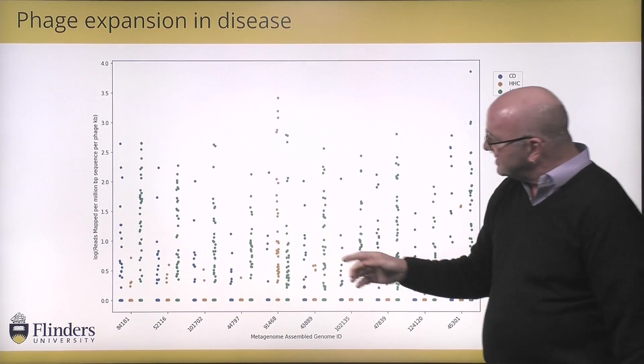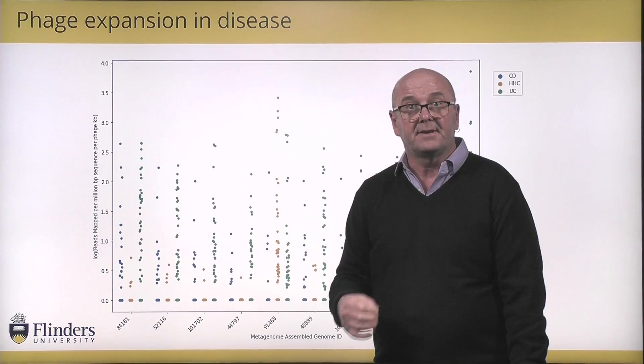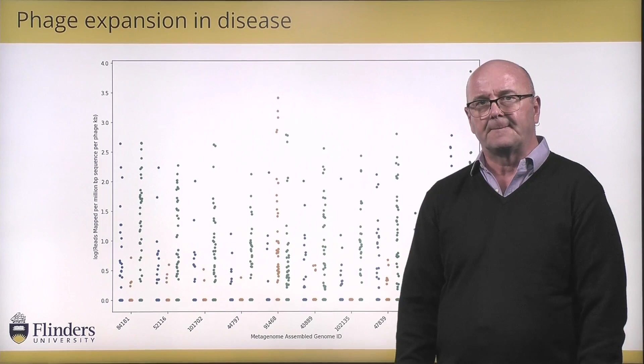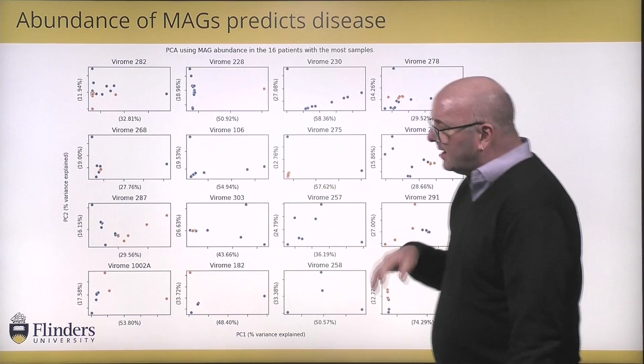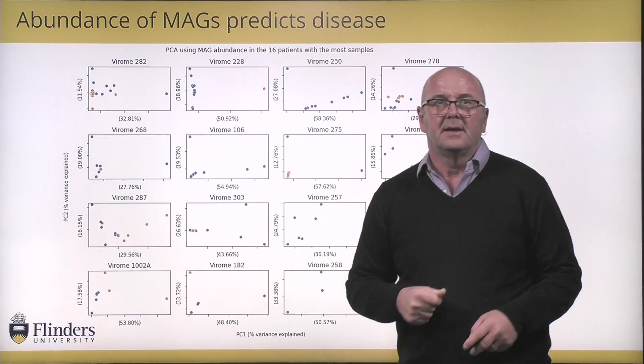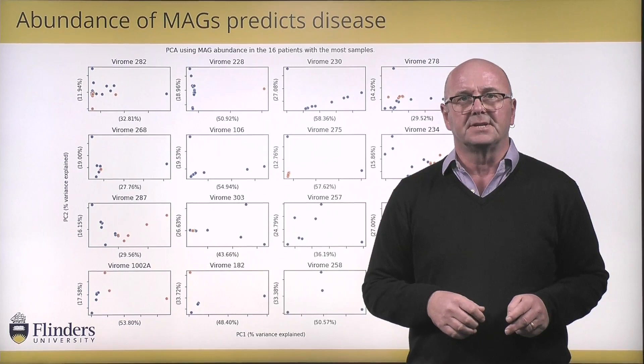Now it's not always true — there are some phages more prevalent in healthy household controls, which is what we would expect. But in many cases we see more phages in the disease state than in the healthy state. We can also use these data to ask whether patients are more similar to their healthy household controls than they are to other patients.